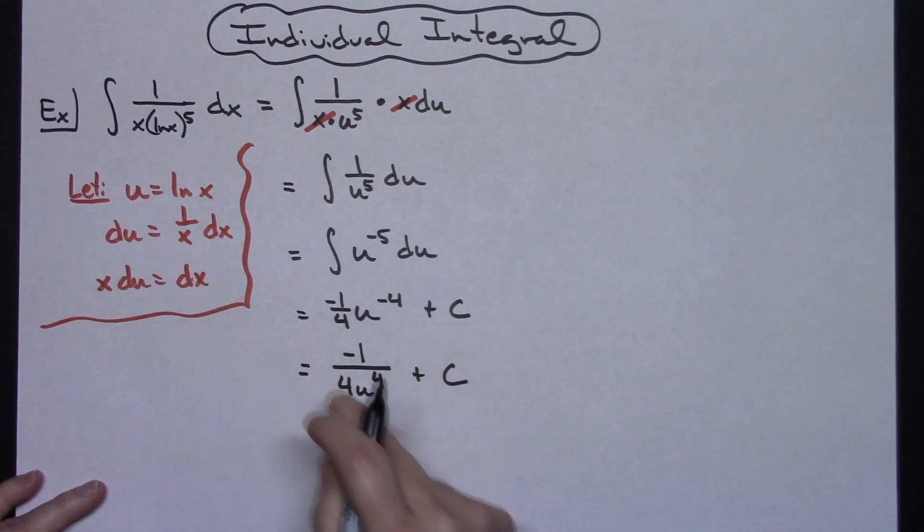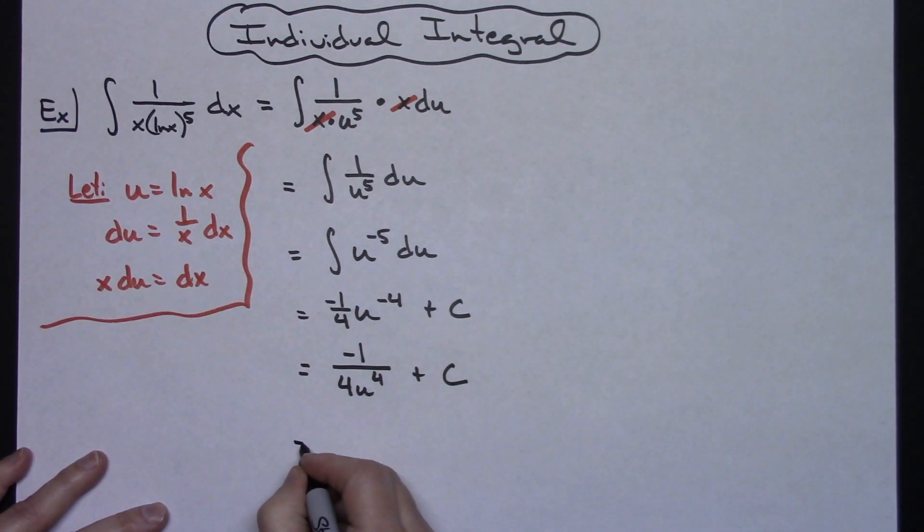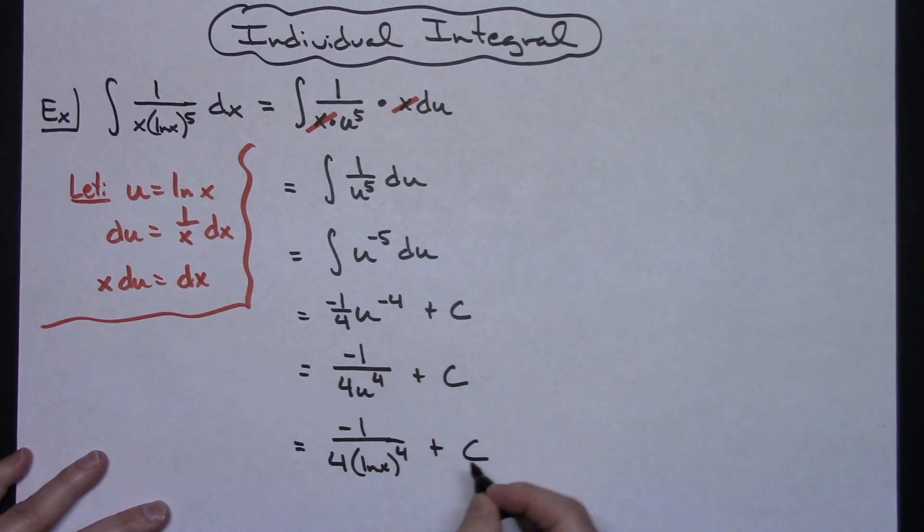Alright and then now last step replacing u with what it equals I'll end up with a final answer of negative 1 over 4 times the natural log of x raised to the fourth power plus c.